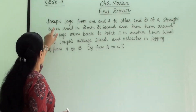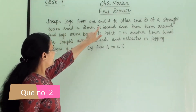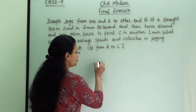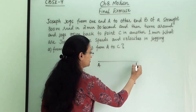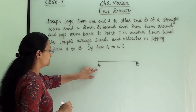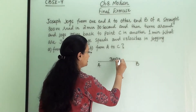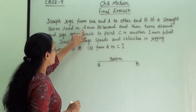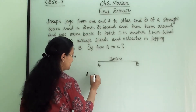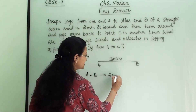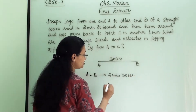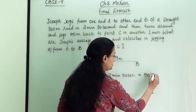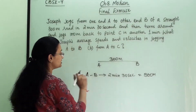Second question. Joseph jogs from one end A to the other end B of a straight 300-meter road. He jogs from A to B, covering that 300-meter straight road in 2 minutes and 30 seconds.